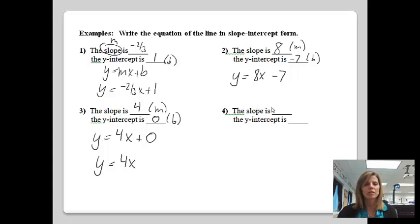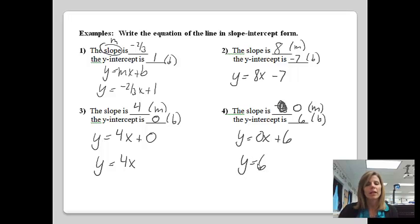Example 4, let's have the slope being 0, and the y-intercept being 6. This is my m, and the y-intercept is my b. When I go to write this, I'm going to have y equals mx, which would be 0x this time, plus the b, which would be 6. A cleaner way of writing this: 0 times anything is just 0, so we could simply write it as y equals 6.